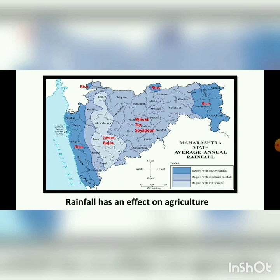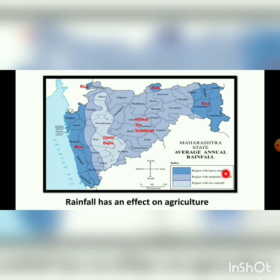Here is another map of Maharashtra showing the average annual rainfall. The title of the map is 'Map of Maharashtra' and the subtitle is 'Average Annual Rainfall.' The index shows three different colors: dark blue stands for regions with heavy rainfall, light color stands for regions with moderate rainfall, and the lightest color stands for regions with low rainfall.